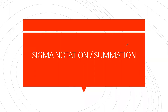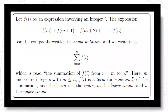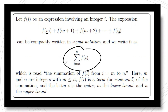Hello everyone, today our lesson is all about sigma notation, also known as summation. Let's start with the definition first. Let f be an expression involving an integer i. The expression f(m) + f(m+1) + f(m+2) + ... + f(n) can be written compactly into sigma notation — as the summation of f(i) where i ranges from m to n.